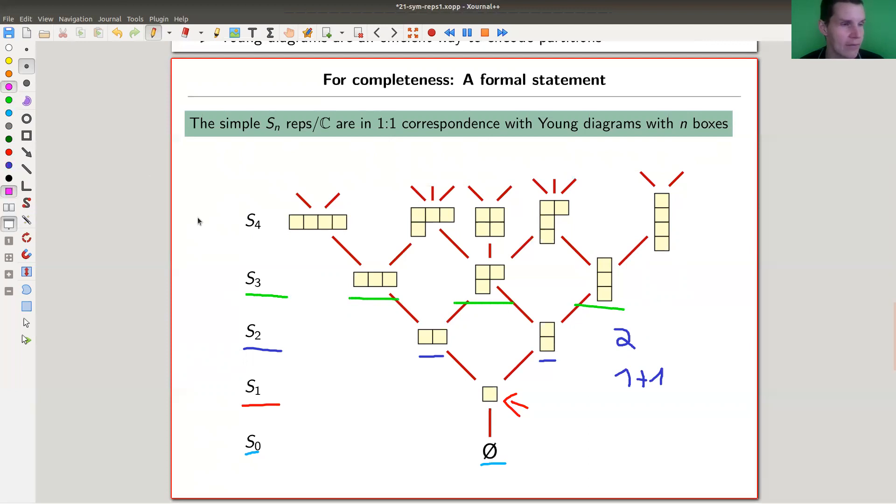which would be either two or one plus one in partition notation. So for S_3, I get those guys, and so on. For S_4, I get five ways to list my partitions here in terms of Young diagrams. For S_5, I get whatever I forgot. It's not so hard. Many ways to do it, and so on, and so on. And that's a pretty good statement, actually.